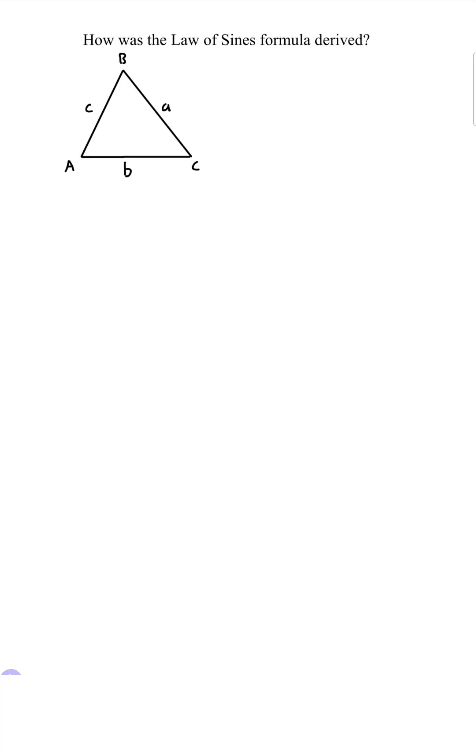How is the law of sines derived? Take this triangle ABC with side lengths a, b, c. Now we have its height.